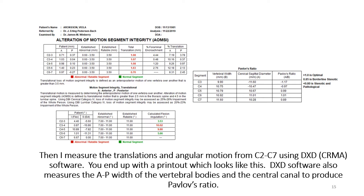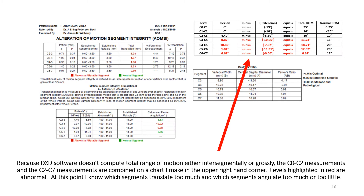Then I measure the translations and angular motion from C2 to C7 using Todd Cielo's DXD software, which produces a printout of those measurements. DXD software also measures the AP width of the subaxial vertebral bodies and the central canal to produce Pavlov's ratio. Because DXD software doesn't compute total range of motion — either intersegmentally or grossly — the occiput to C2 measurements and C2 to C7 measurements are combined on a range of motion chart. At this point, I know which segments translate too much, which segments angulate too much or too little, where the fixated segments are, which ones are hypermobile, and whether there is any paradoxical motion.